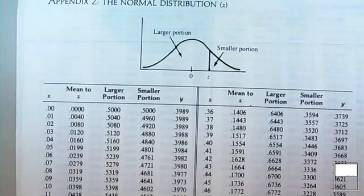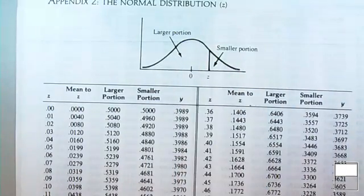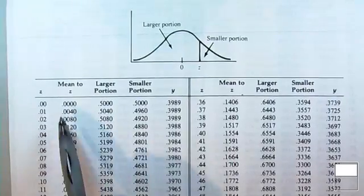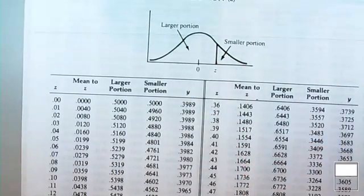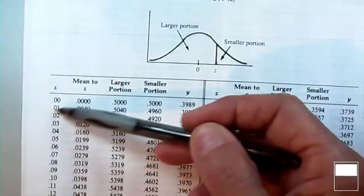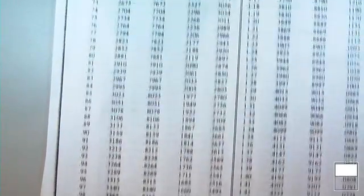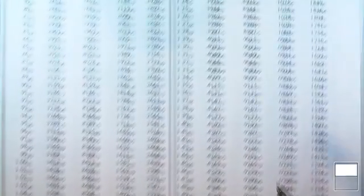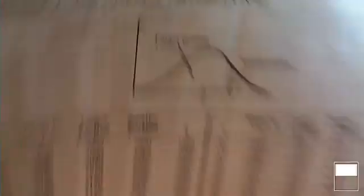Let's look at the structure of this table. At the top of the table you see a drawing of a normal curve, divided into a smaller portion and a larger portion — I'll explain what that means in a minute. We have five columns. The column on the far left contains all the possible z-scores in this normal distribution. The z-scores start at zero, which is the mean, and they go out — a z-score of 0.26, 0.7, and on the next page z-scores of 1, 1.29, and so on.